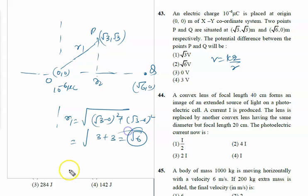For r2, we calculate the square root of (√6 - 0)² + (0)². This gives √6.